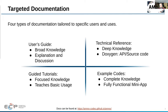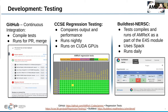We strive to provide excellent documentation, split into four modes targeting specific users: a user's guide providing general knowledge, a technical reference generated automatically via Doxygen for deep searchable knowledge, example codes providing an accelerated first step for experienced developers, and guided tutorials that teach specific knowledge without getting bogged down by details.